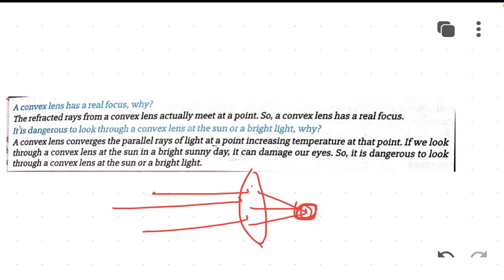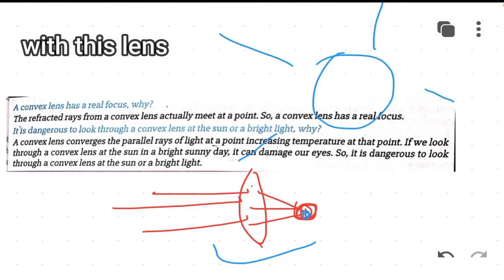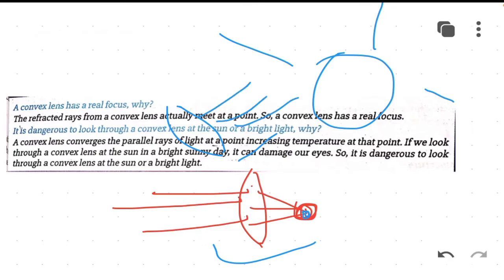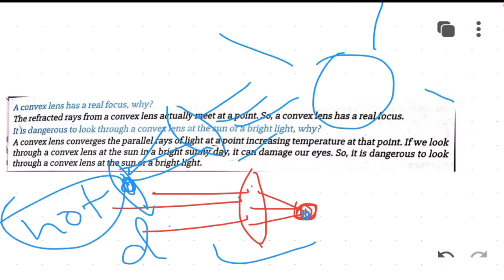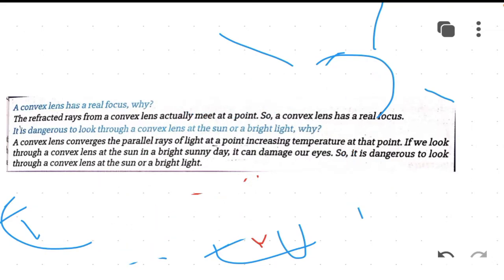To explain: this is a convex lens and it converges all the parallel rays of light at a single point. When we look toward the sun through this lens, the parallel light coming from the sun is converged to our eyes. When the rays of light from the sun converge to our eye at a single point, the temperature at that point becomes very hot and our eye can be damaged. So it is very dangerous to look at bright light or the sun through a convex lens.